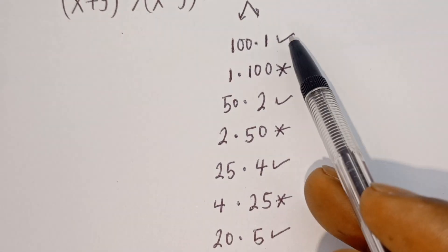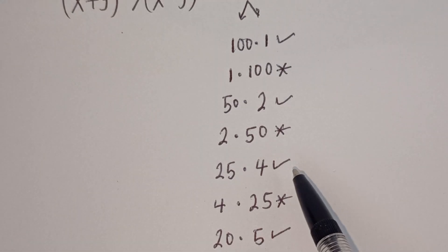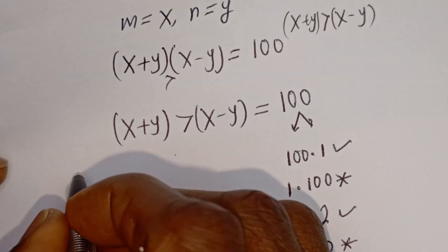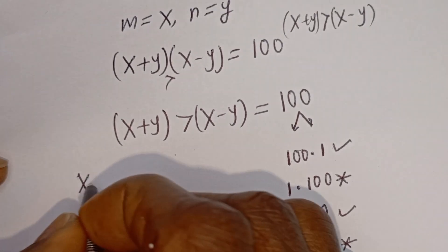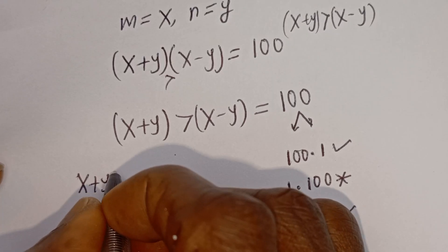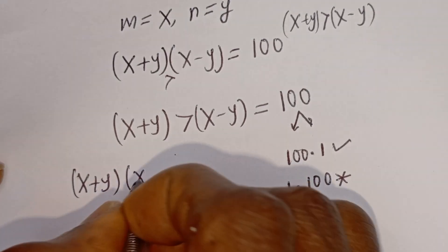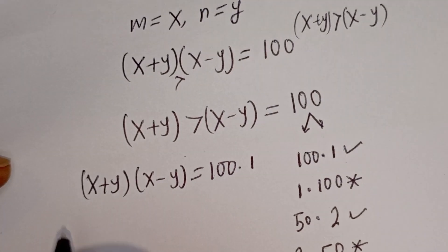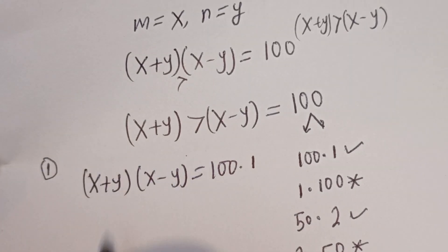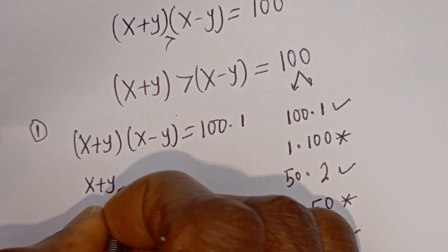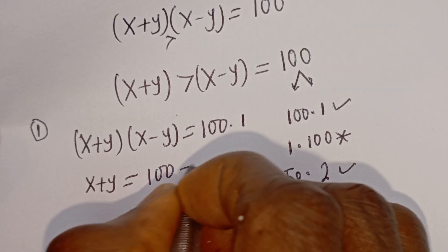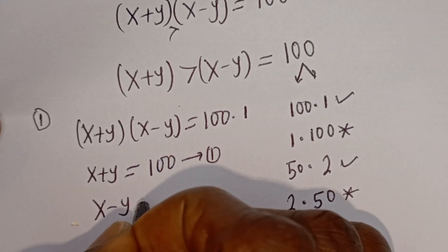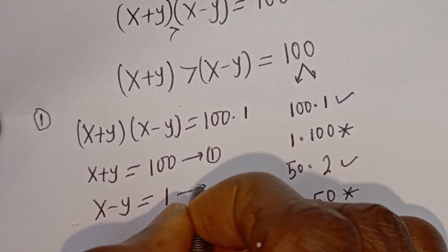So we have four cases. For the first case, (X plus Y)(X minus Y) = 100 × 1. Then X plus Y = 100 (equation 1) and X minus Y = 1 (equation 2).